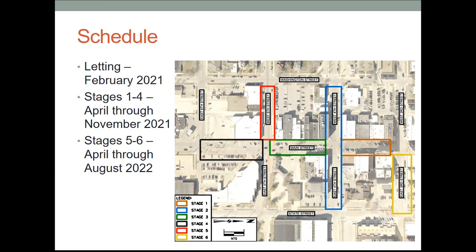As for the project schedule, the plans will go to the City Council soon for their review and approval. Bids will be due in late February. Construction could start as early as April, depending on weather, when the snow melts, and when temperatures become conducive for construction. There are four project stages to be constructed in 2021: the 300 block of Main Street, reconstruction of 4th Street and paver installation concurrently with the Main Street improvements, streetscape improvements on the 400 block of Main, and paver installation on the 500 block of Main. Then in 2022, the reconstruction of East 3rd from Main Street to State Street and the rehabilitation work on West 5th from Washington to Main are included in stages 5 and 6.